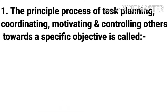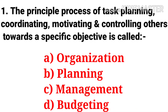Question 1: The principal process of task planning, coordinating, motivating, and controlling others towards a specific objective is called — the options are: organization, planning, management, budgeting. The answer is management.